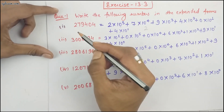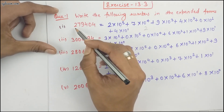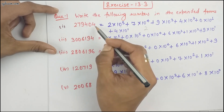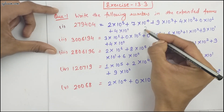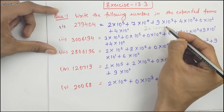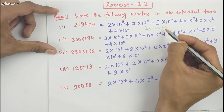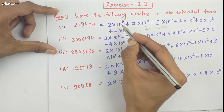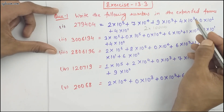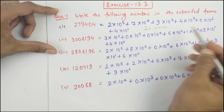The first question says: write the following numbers in the expanded form. The first part is 279404. As you can see, 2 is at the fifth place, so it can be written as 2 into 10 to the power 5. Similarly, 7 into 10 to the power 4, 9 into 10 to the power 3, 4 into 10 to the power 2, 0 into 10 to the power 1, plus 4 into 10 to the power 0. This is the expanded form of this number.